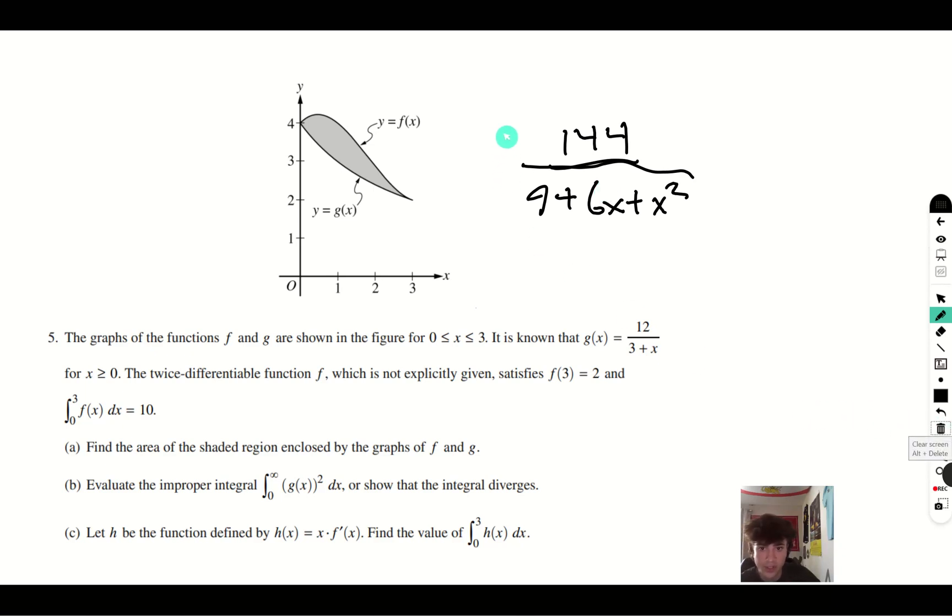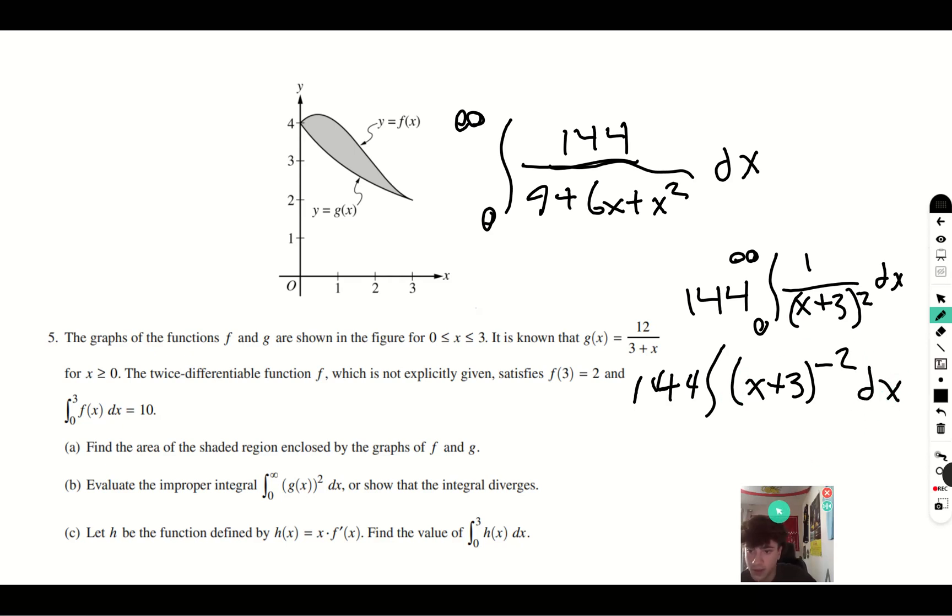So we are now going to take the integral from 0 to infinity dx. The first thing we want to do is compact this again and take the 144 out. Integral from 0 to infinity, 1 over x plus 3. I'm just going to flip those because it doesn't matter. Square dx. And then you can just put this to the negative 2 to get this on the numerator. x plus 3 to the negative 2 times 144.